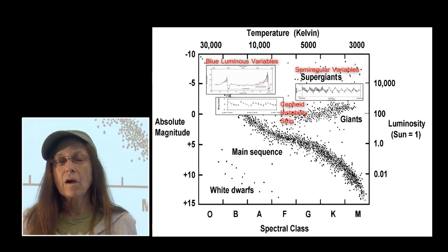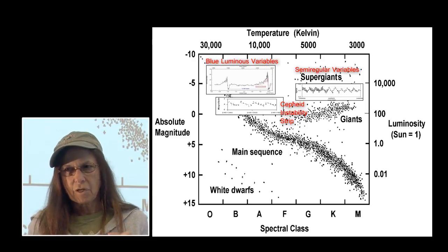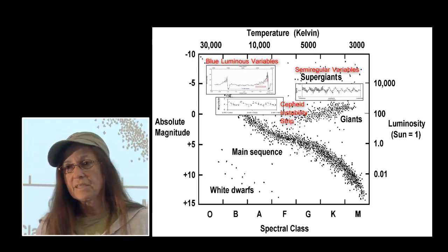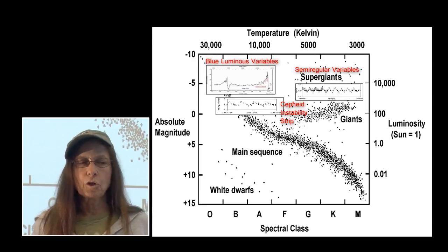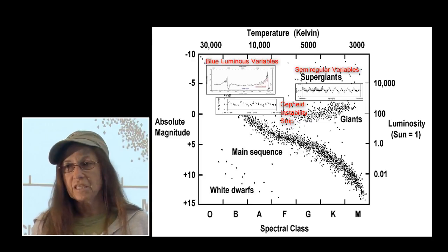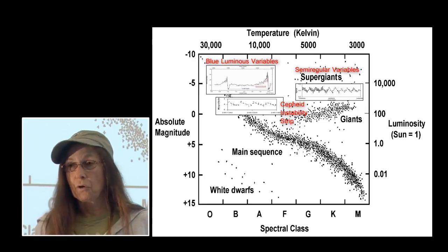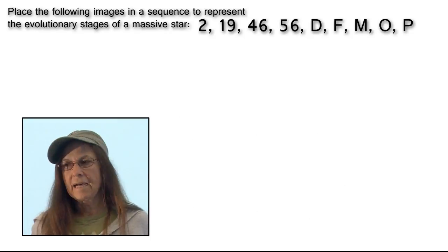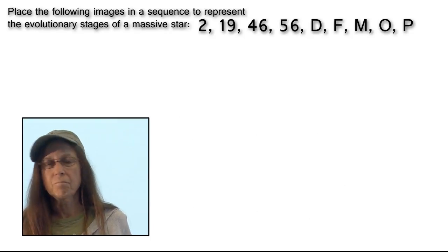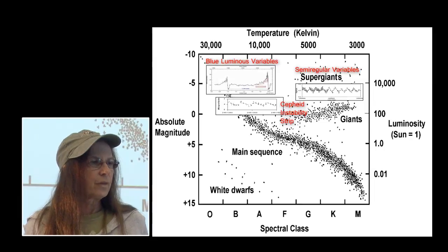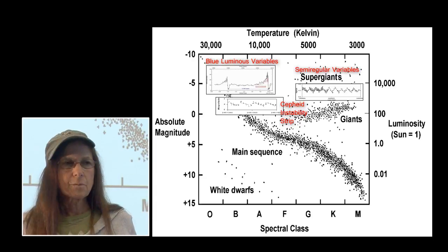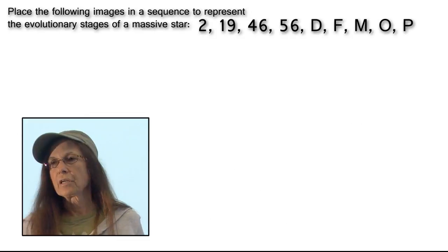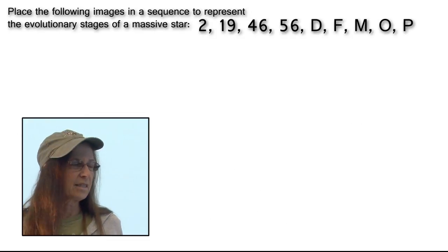Remember, we're also interested in the HR diagram, because as these stars transition they're going to go through some of these instability strips and end up producing a light curve unique to that particular stellar evolutionary stage. We're going to add some of those things too — there are three specific light curves represented here that are produced by some of these more massive stars, and we're going to work those into the sequence.